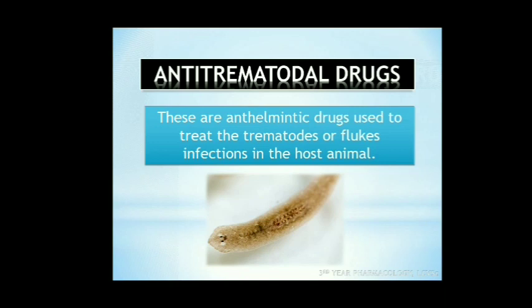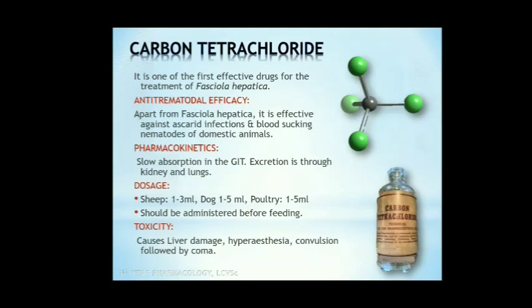Now comes anti-trematodal drugs. These are drugs used to treat trematodes or fluke infections in host animals. Flukes are also known as flatworms. The first drug is carbon tetrachloride (CCl4). It is one of the first effective drugs for treatment of Fasciola hepatica, introduced in the 1920s. It is obtained from chlorination of carbon disulfide or reaction of disulfide with sulfur monochloride. It is a volatile, colorless liquid and very toxic in nature. It is very effective for the treatment of Fasciola hepatica in sheep — a sheep anti-trematodal drug effective against adult flukes. Also effective against ascarid infections in chickens and dogs, and has activity against blood-sucking nematodes including Ancylostoma in dogs and cats, Haemonchus and Bunostomum in cattle and sheep; strongyles of horses are also susceptible.